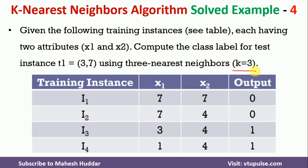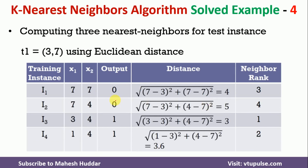First, we will calculate the distance from this new instance to the existing data points. We use Euclidean distance in this case. For the first instance, the distance is the square root of (7−3)² + (7−7)², which is equivalent to 4.